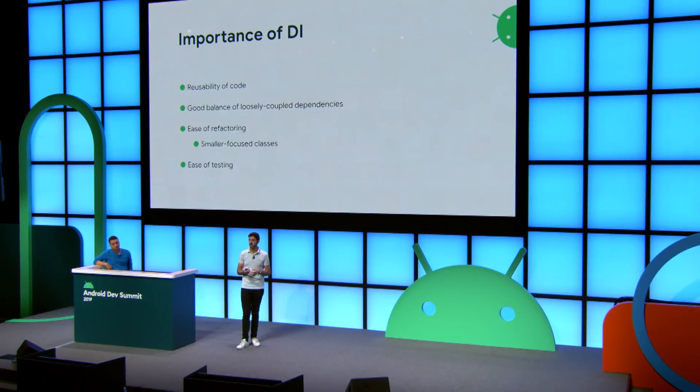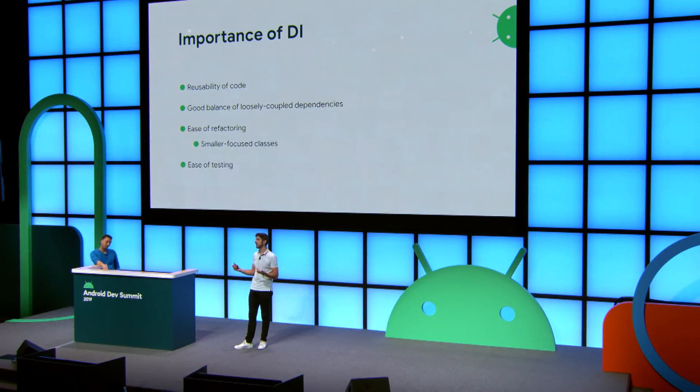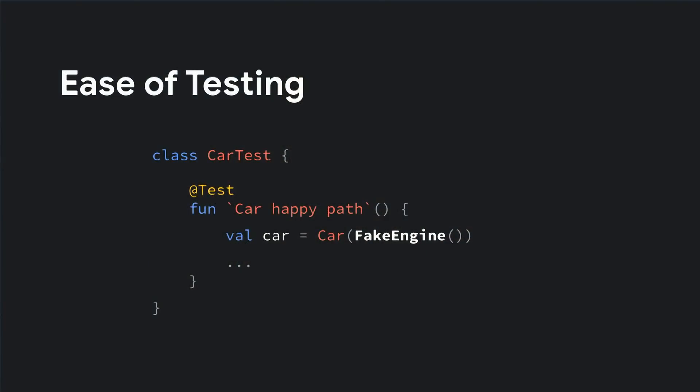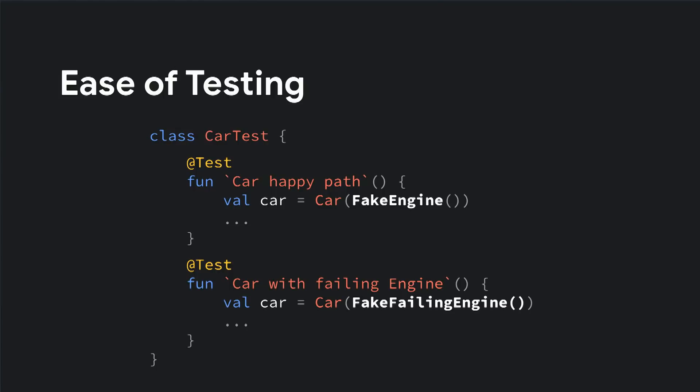DI also helps you with testing. Now you can swap in different implementations of a dependency to test all the different scenarios that you want. For example, here we have a happy path — we just want to pass in a fake engine to check that car works OK. Now, if you want to check how a car works with a failing engine, you just have to pass a different implementation of engine — for example, this fake failing engine. And that's it, you don't have to do anything else.